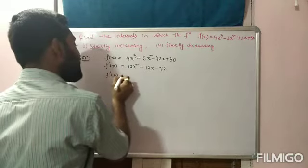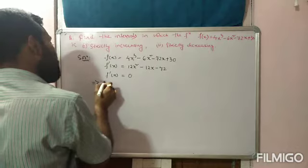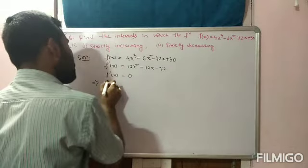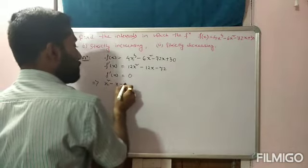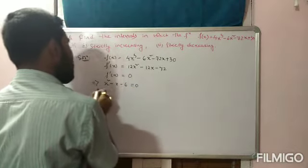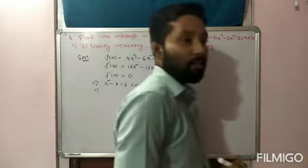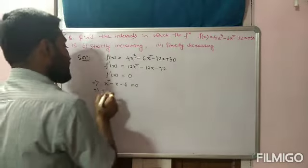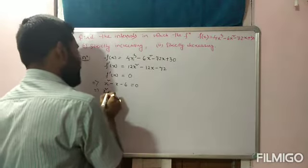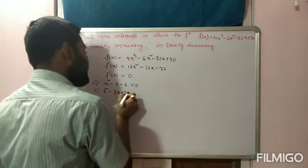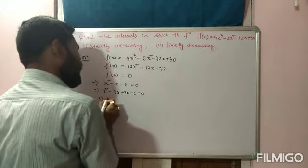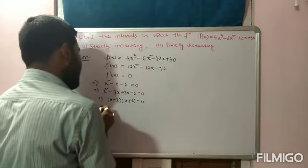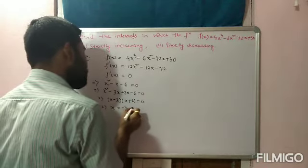Step 2: Put f'(x) = 0. Taking 12 as common, we get x² - x - 6 = 0. Factoring: (x - 3)(x + 2) = 0. Therefore, the values of x are -2 and 3.